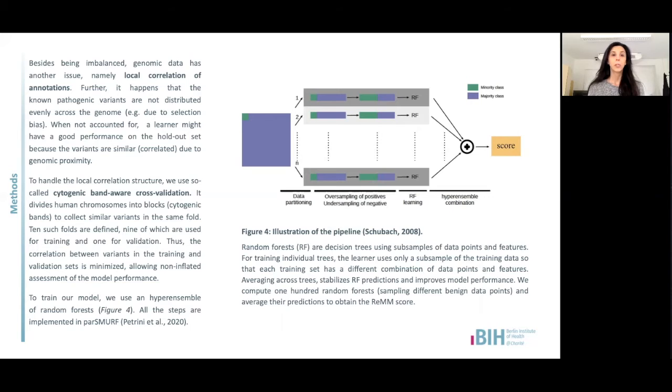To overcome this issue, we use the so-called cytogenic bands cross-validation that was already developed for the previous version of REM. The idea is simple: collect proximal variants in one data fold, train the model on this data, and validate on a data fold that does not contain correlated or proximal variants. With this technique, we train 100 random forests and average their predictions to acquire the REM score. On the poster, you see a schematic representation of the entire pipeline.